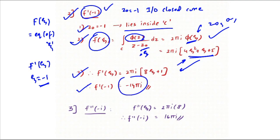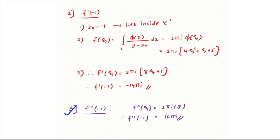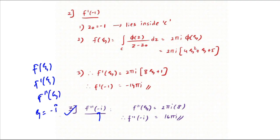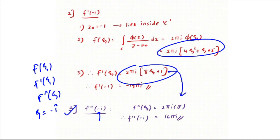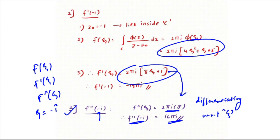For part (3), f''(−i): z₀ = −i lies inside the ellipse (since |−i| = 1 < 2.5), so the answer is not zero. From f'(ζ) = 2πi(8ζ + 1), take one more derivative: f''(ζ) = 2πi × 8 = 16πi. Since there is no ζ remaining, substituting ζ = −i still gives f''(−i) = 16πi.